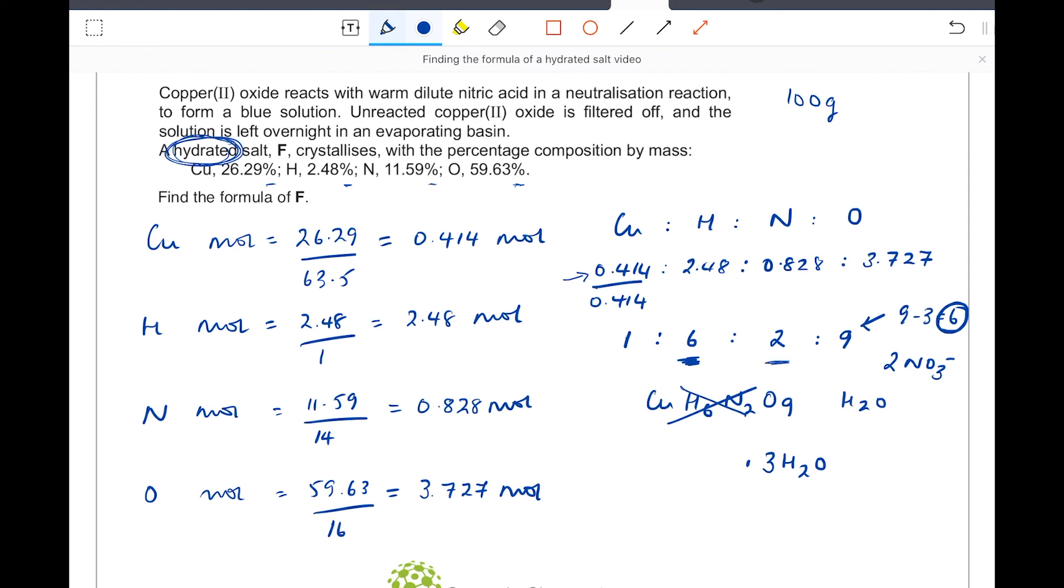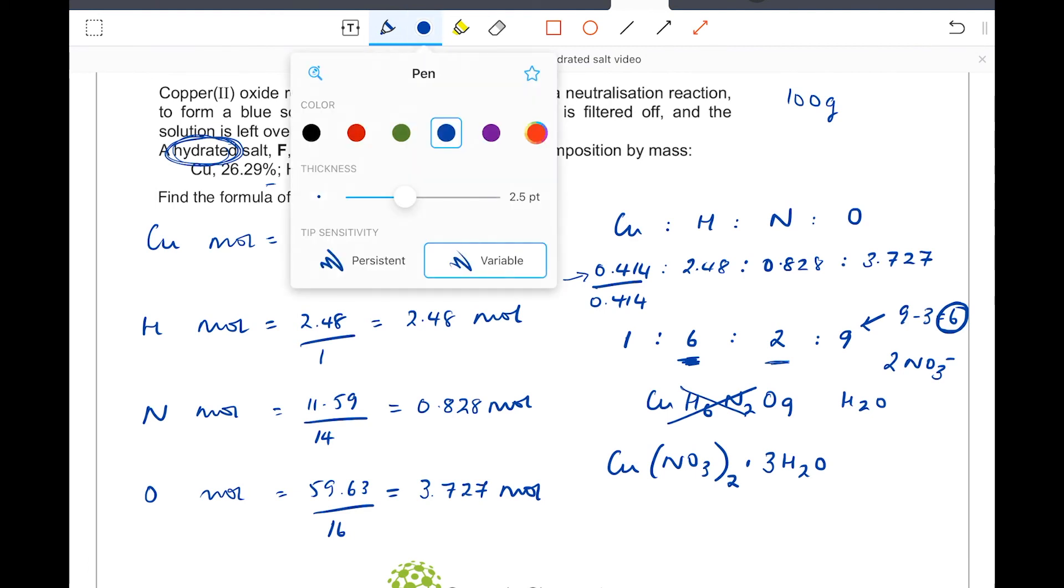We may already know that the formula of a nitrate ion is NO3 minus. So the answer is copper nitrate, okay, it's in brackets because we've got two of them, ·3H2O. That is the formula of our salt.